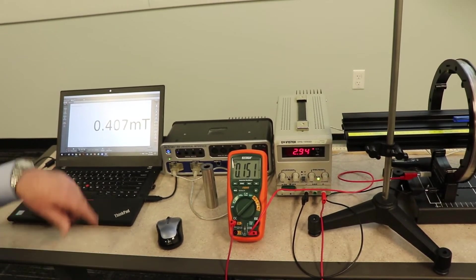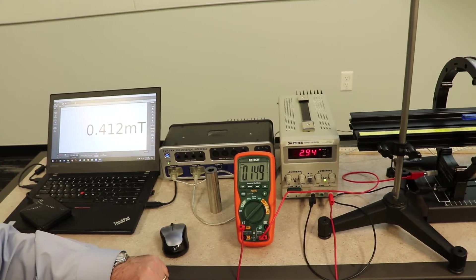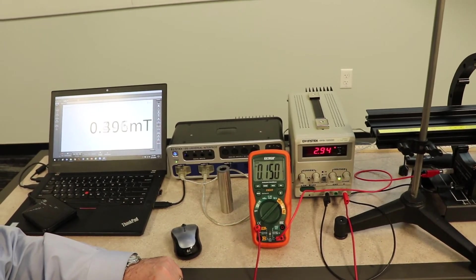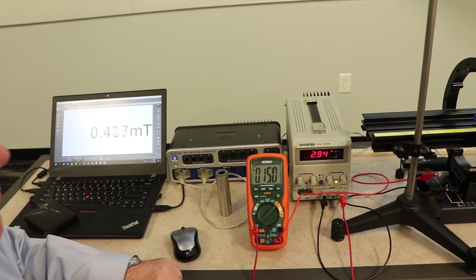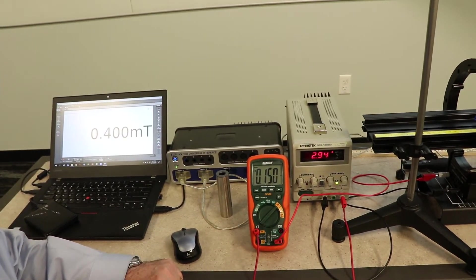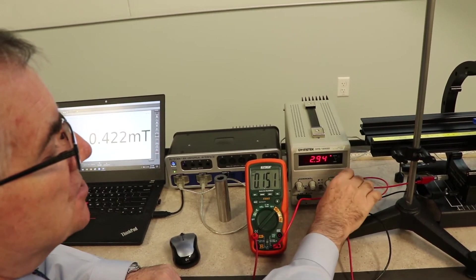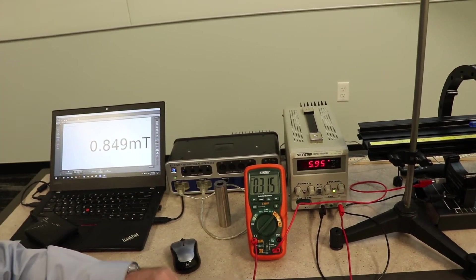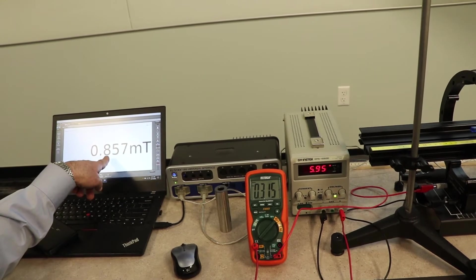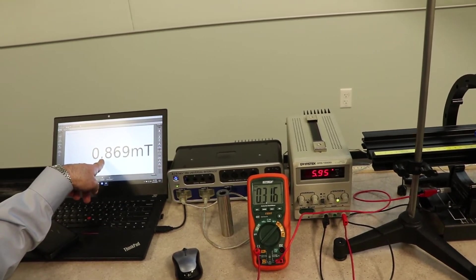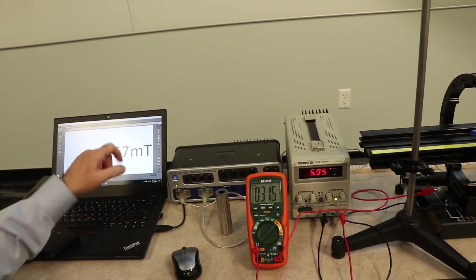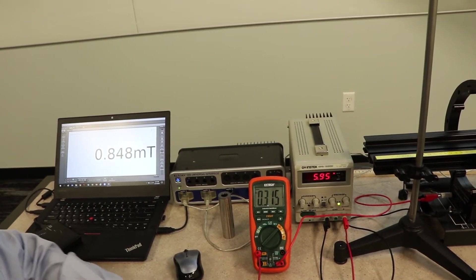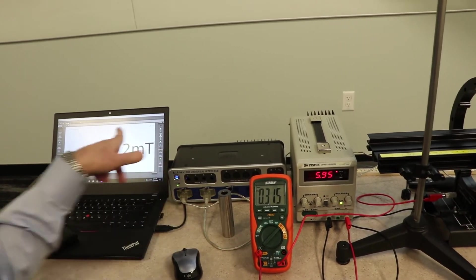At about 3 volts, I have 0.150 amps going through there, so I'd write that down. I'm not interested in the voltage. Let's give it another shot: 5.95 volts, I got 0.288 amps and 0.864 millitesla. That sounds good.